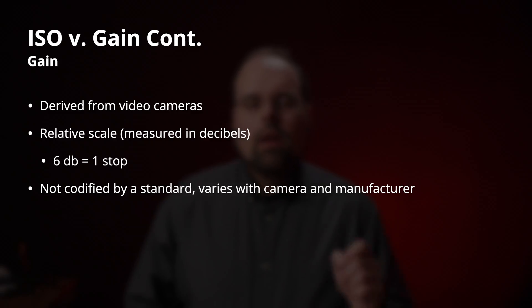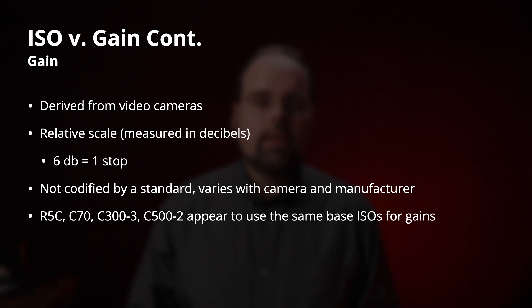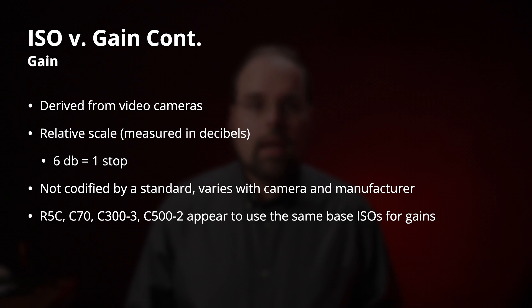To make this even more confusing, gains are not codified by an industry standard — at least not any I can find. They vary from camera to camera and manufacturer to manufacturer. Even looking at Canon's older cinema cameras that also support gains, they have different reference points. The good news is that if you're shooting with an R5C, C70, C300 Mark III, or C500 Mark II — basically Canon's current crop of cinema cameras — they all appear to use the same base ISOs or reference points for their gains.